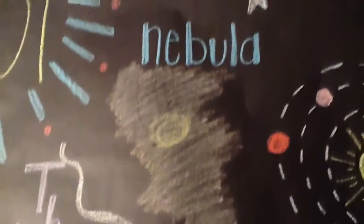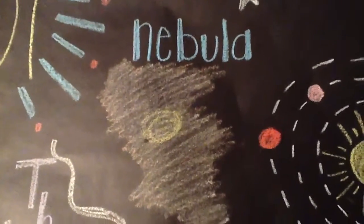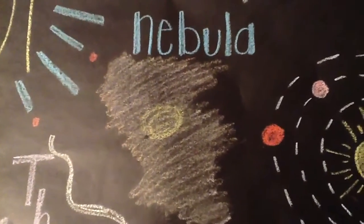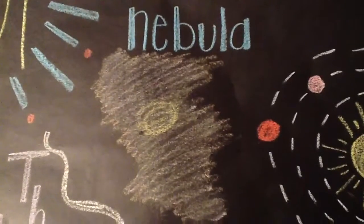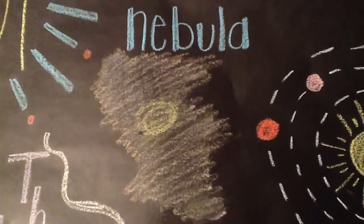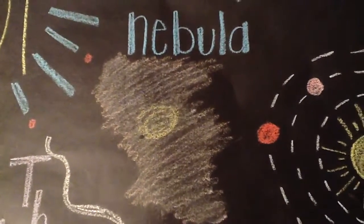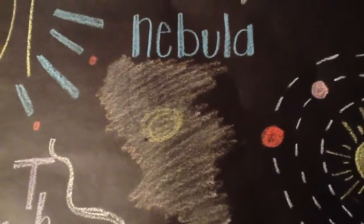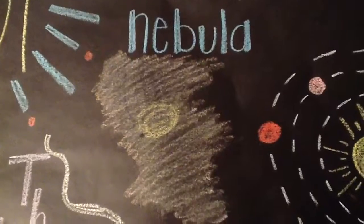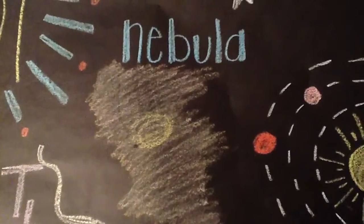Next, we have nebulae, which are giant clouds of dust held together by gravity. Over time, parts of nebulae become more dense and stars are born.